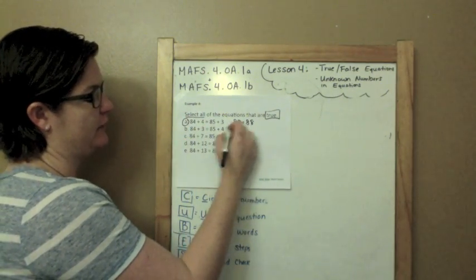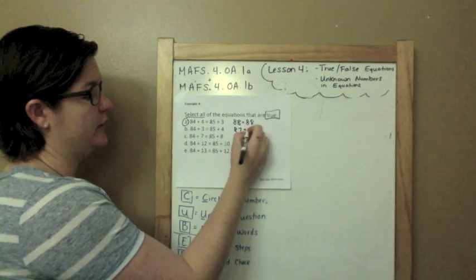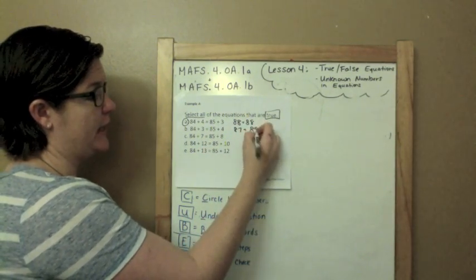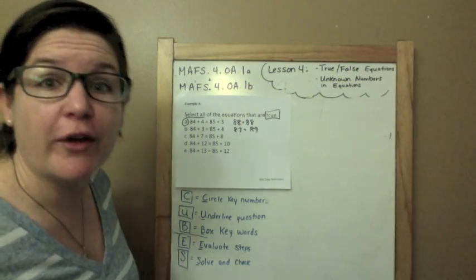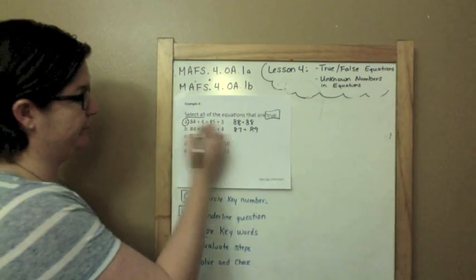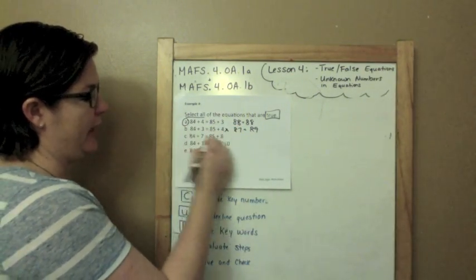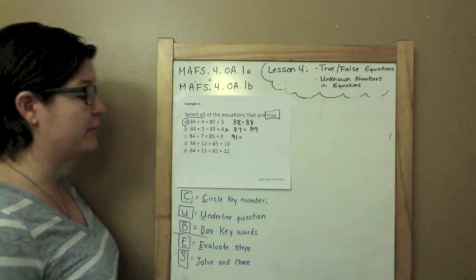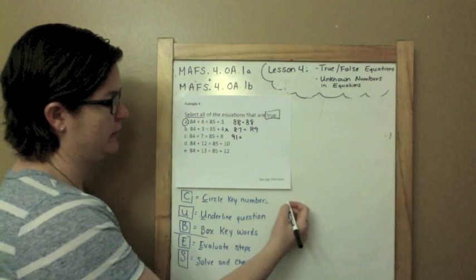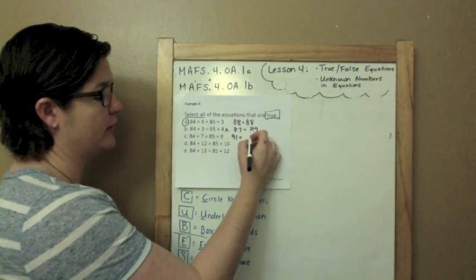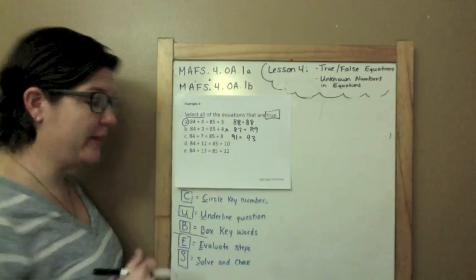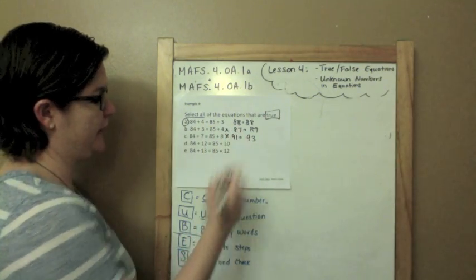84 plus 8 plus 3 is 87. 85 plus 4 is 89. Is that equation true? Nope! Don't mark it. 84 plus 7 is 91. 85 plus 8 is 93. I almost had to write that one out. Is that equation true? Nope! That's false. Eliminate that one.